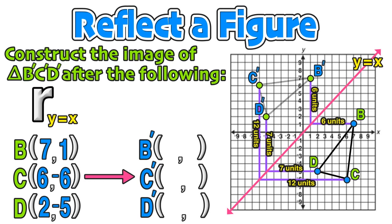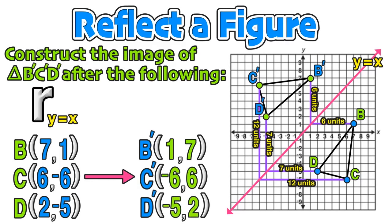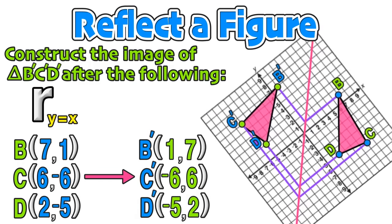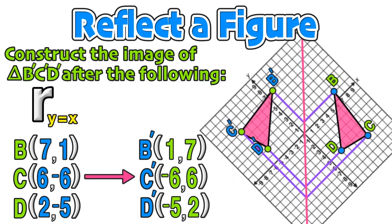We can now construct the reflected figure. The coordinates of B' are (1, 7), the coordinates of C' are (negative 6, positive 6), and the coordinates of D' are (negative 5, 2). We can compare the pre-image and the image after the reflection by rotating the graph to see how the two figures are reflected over the line y equals x.